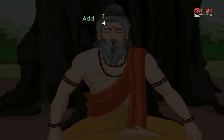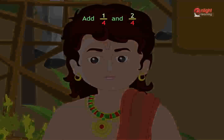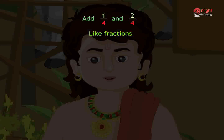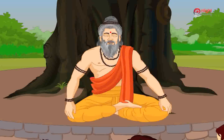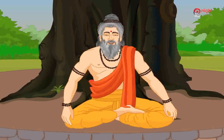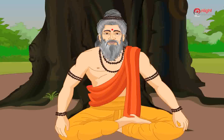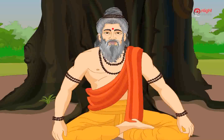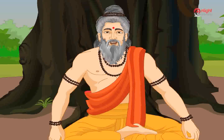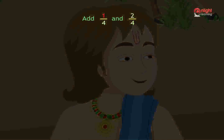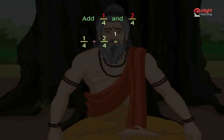Let us add one by four and two by four. What are these fractions called? As the denominators are the same, the fractions are called like fractions. Without the help of diagrams, let us add the like fractions. While adding like fractions, we need to add only the numerator and write the sum over the same denominator. So tell me, what are the numerators in this fraction? It is one and two. Now add one and two — the sum is three. The denominator is four, so write three over four. Hence the sum of one by four and two by four is three by four.